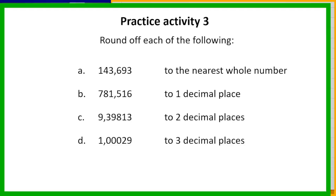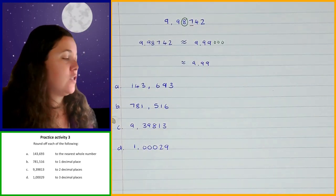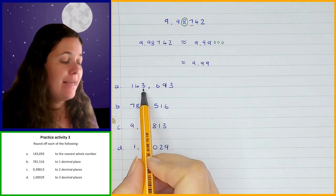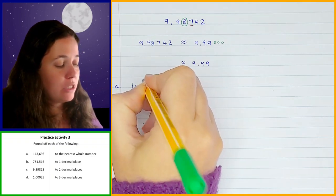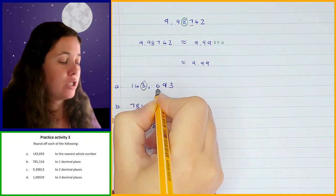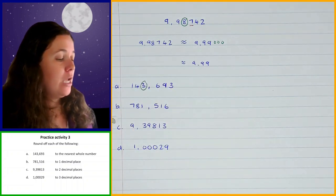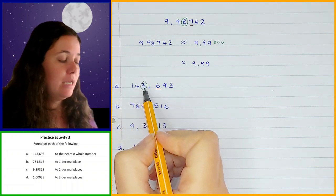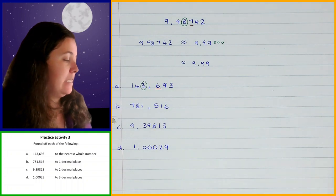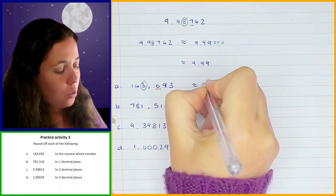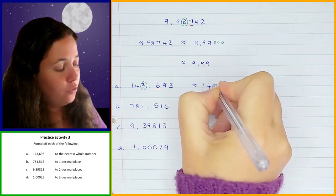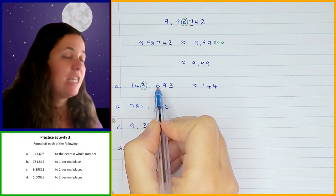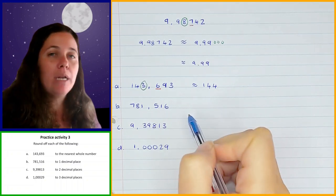Let's go through each of those. The first one: you had to round off to the nearest whole number. The digit in the whole numbers position is the three. Looking at the digit straight after it — the six — six is in the five or more category, so the three goes up one and changes to four. Everything after it changes to zeros, so I don't need to write the comma at all. The answer is 144.